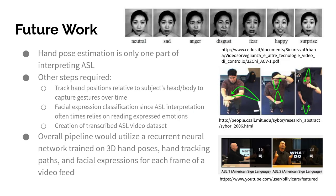Hand pose estimation is only one part of interpreting ASL. Other steps include tracking the hand position relative to the subject's head or body, as well as their facial expression, since ASL relies on expressed emotions as well as hand gestures and hand poses. On top of this, an actual transcribed ASL video dataset is required to be generated. I've found a YouTube channel which has some of that data already. The overall pipeline would then utilize a recurrent neural network trained on 3D hand poses, hand tracking paths, and facial expressions for each frame of the video.